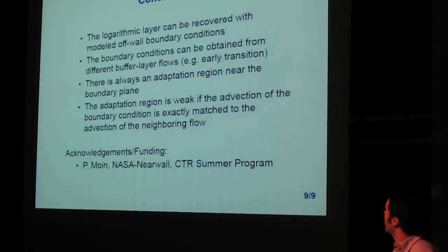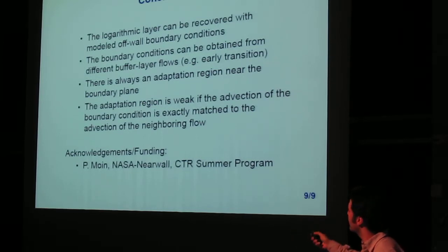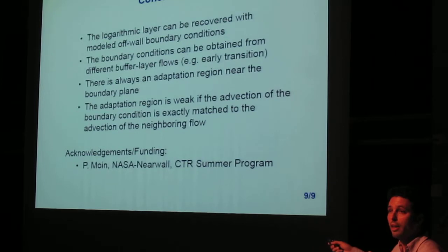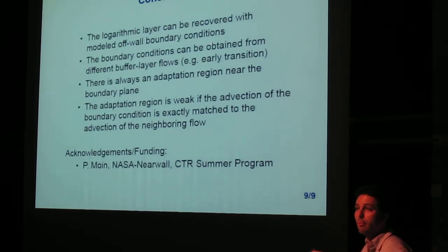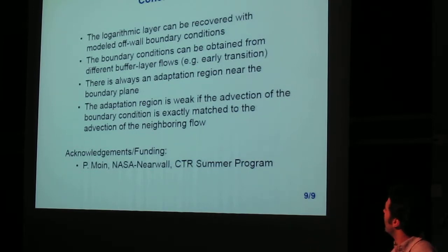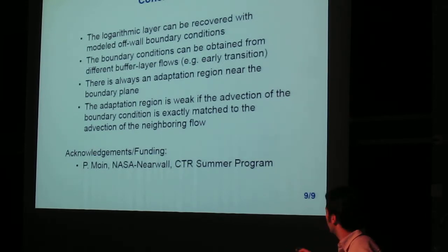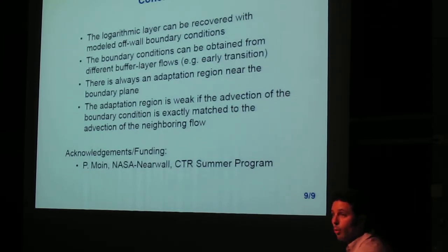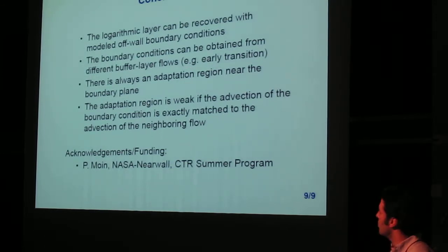So to conclude, one important thing is that you can forget about the buffer layer, just impose some boundary condition on the top of it and still recover a logarithmic layer. The boundary conditions for that kind of off-wall simulation can be obtained from a variety of buffer layers, and they are essentially interchangeable. So you could have your minimal unit of buffer layer packaged and use it to run in any turbulent simulation. And you will have those kinks in the velocity that I was showing and especially in the pressure. You will have that overshoot in the pressure and it's important that you match as smoothly as possible the boundary condition motion with the overlying flow to mitigate those pressure kinks.